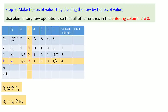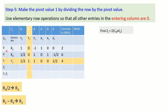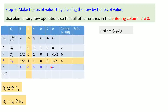Now let's calculate the new Zj values. Zj is the summation of CB (basic variable coefficients) multiplied with the corresponding column elements, then added up. For example, 0×1 + 0×(1/2) + 8×(1/2) gives the first Zj, and 0×0 + 0×0 + 8×1 gives another. After computing all columns, we get the new Zj values.